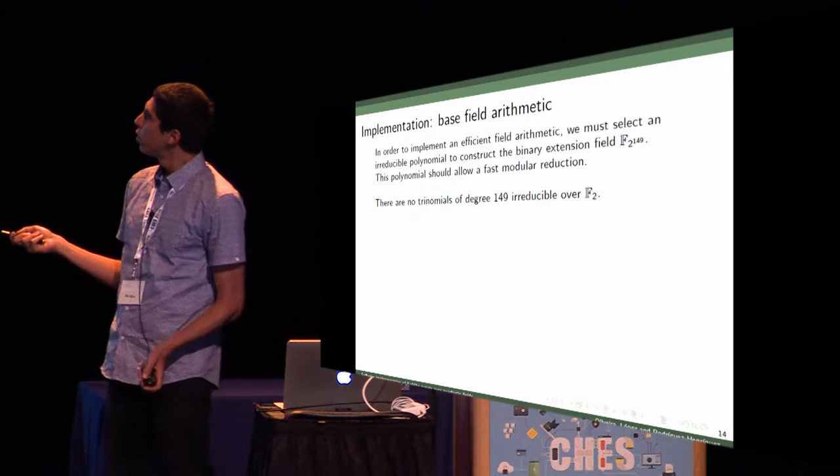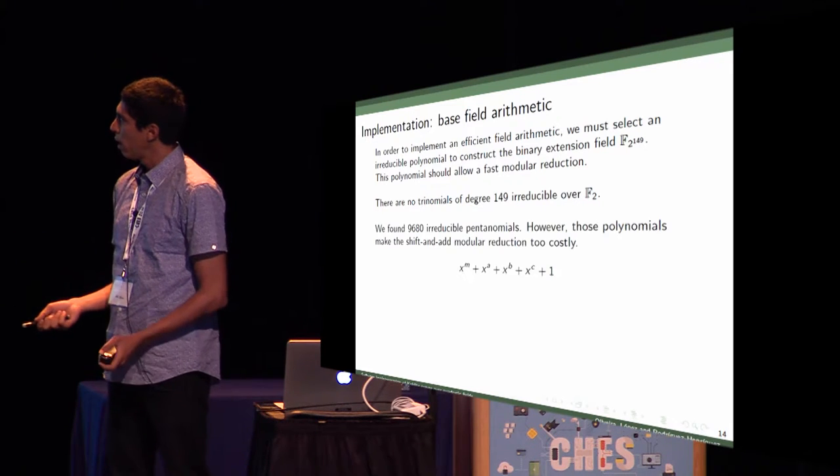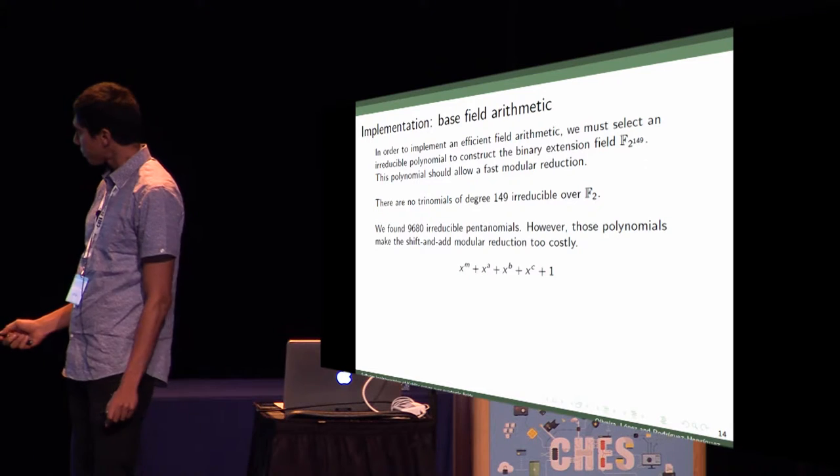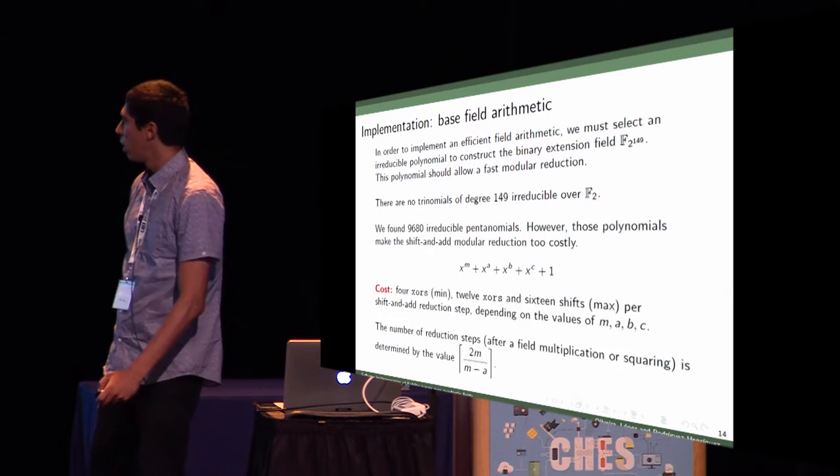However, there are no trinomials of degree 149 irreducible over F2, and there are many irreducible pentanomials of this form. However, these pentanomials make the modular reduction very costly.